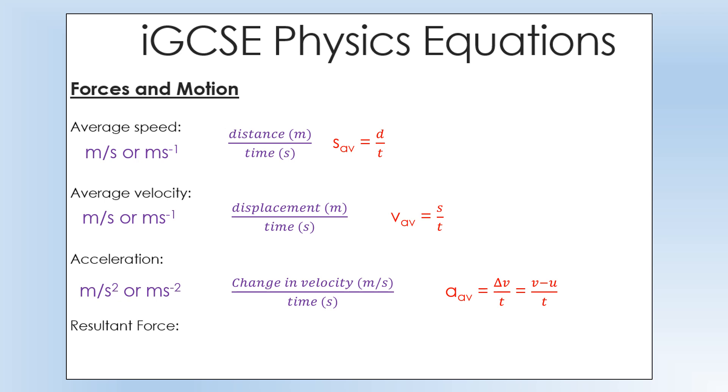V minus U over T, where V is the final velocity and U is the initial velocity of the object. So you sometimes see it in that form.